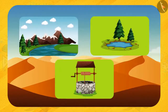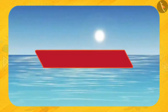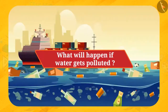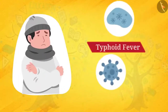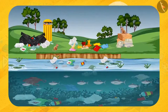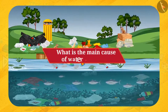Now you can understand how important water is. Water decides the biodiversity of a region. But what will happen if water gets polluted? Lots of problems are being faced by humans due to water pollution, like typhoid fever, cholera, etc. In fact, aquatic animals are also being affected. Do you know what is the main cause of water pollution?